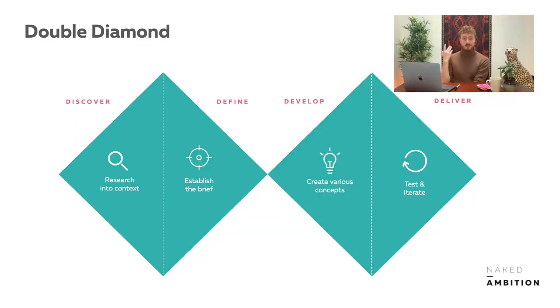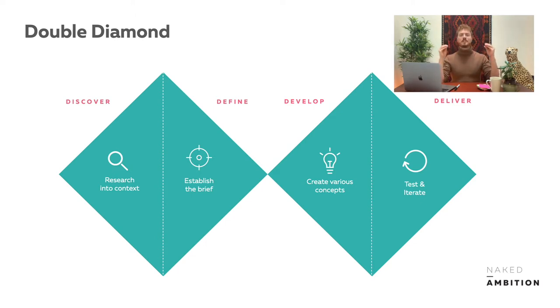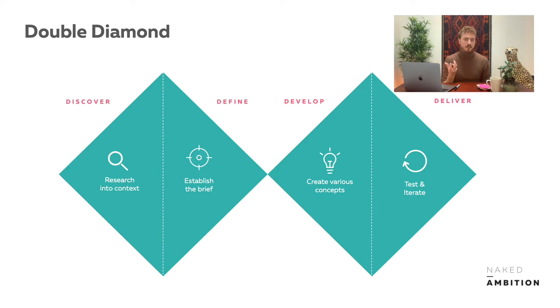Those are three examples of design thinking in the field. Now I'd like to go to the actual methodology behind all of it, which is called the double diamond. As you can see in this visual, there are two diamonds. The double diamond is one of the methodologies — one of the processes visualized in design thinking that we use. It's from the British Design Council.